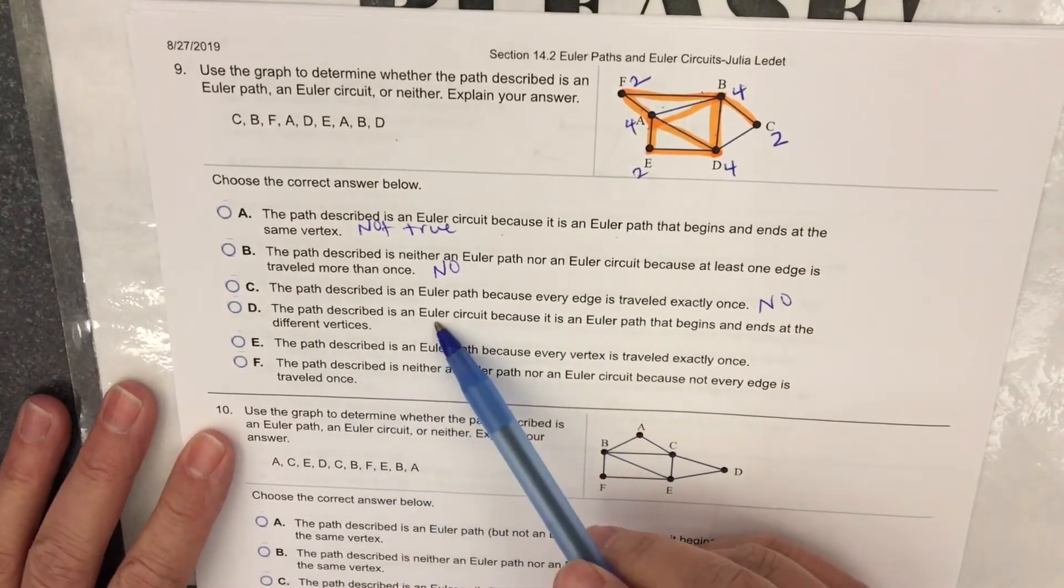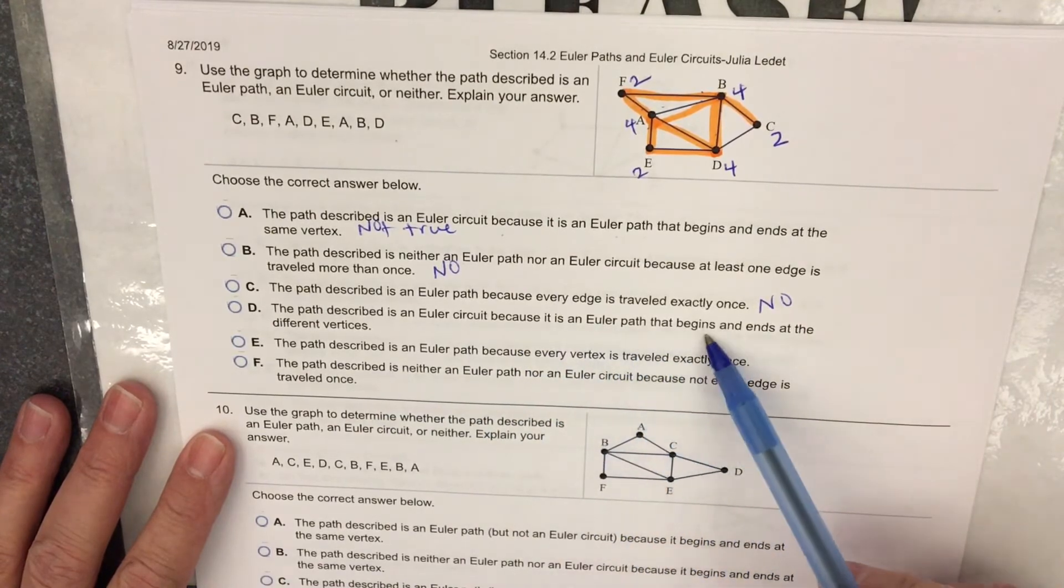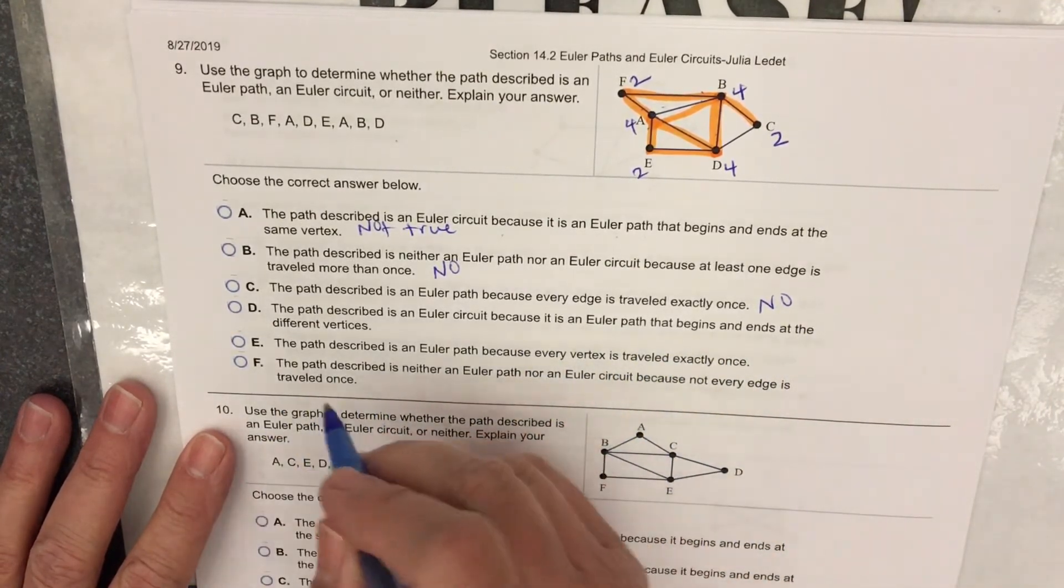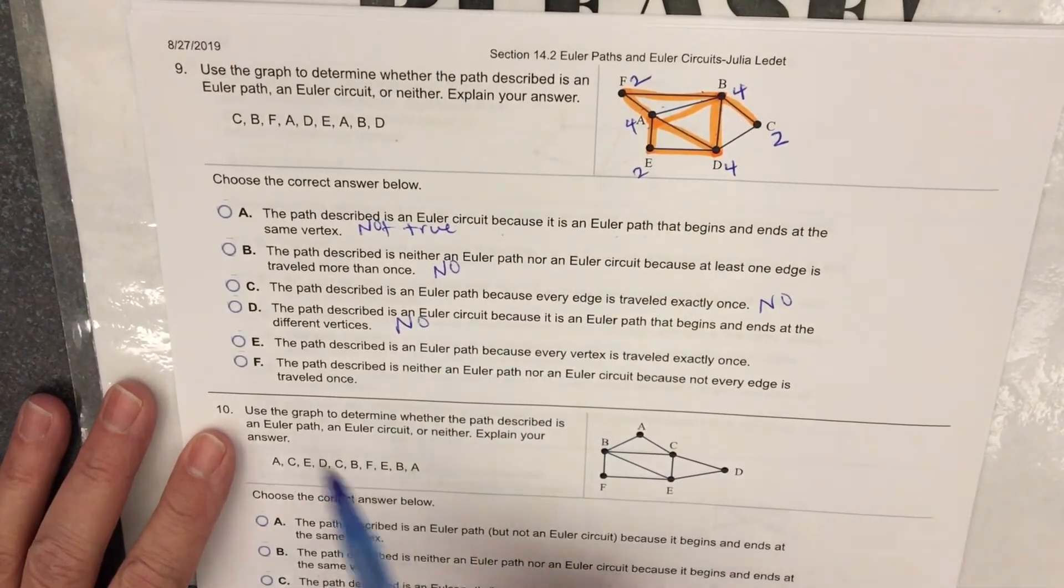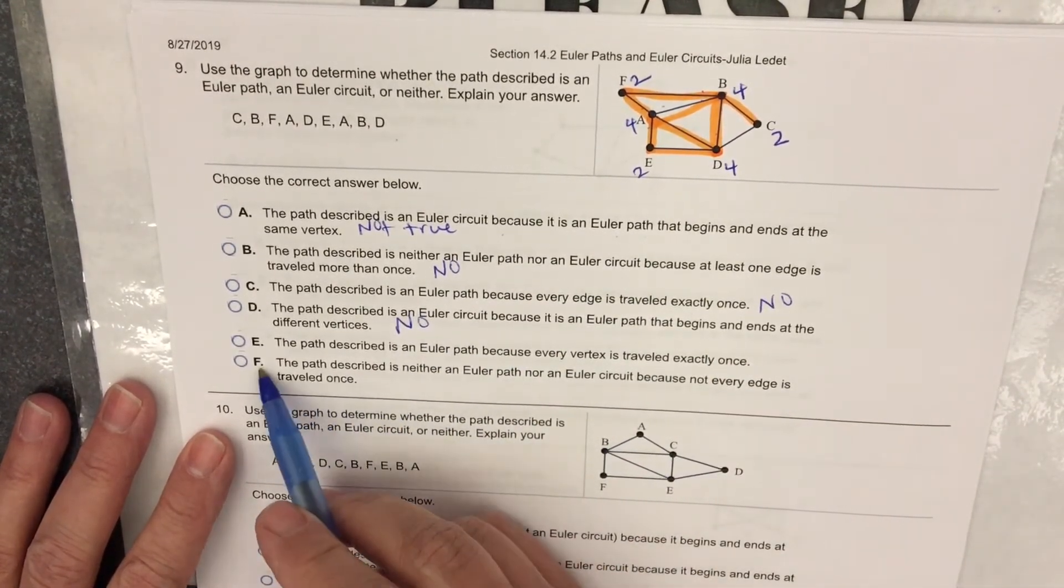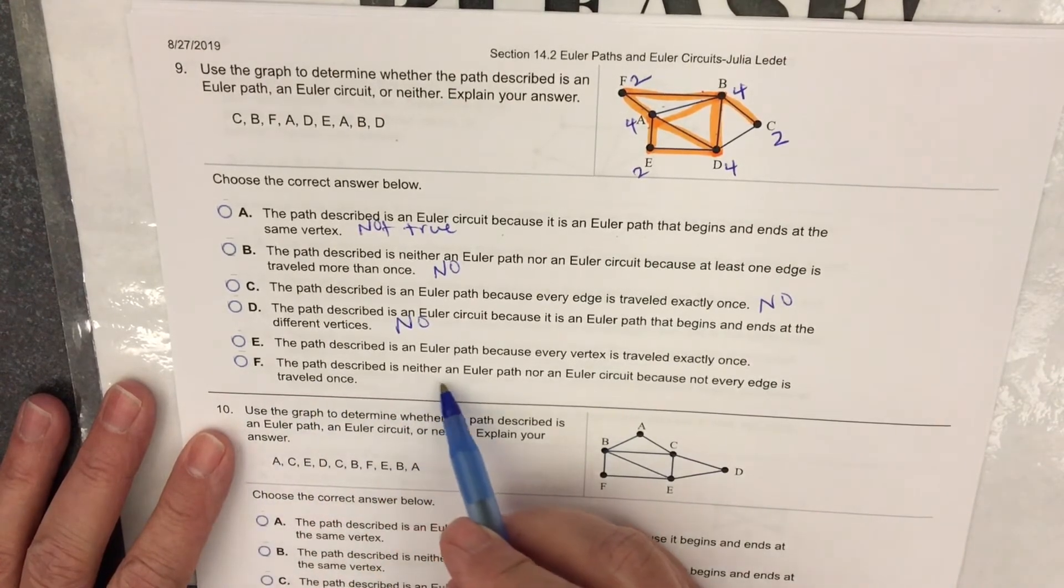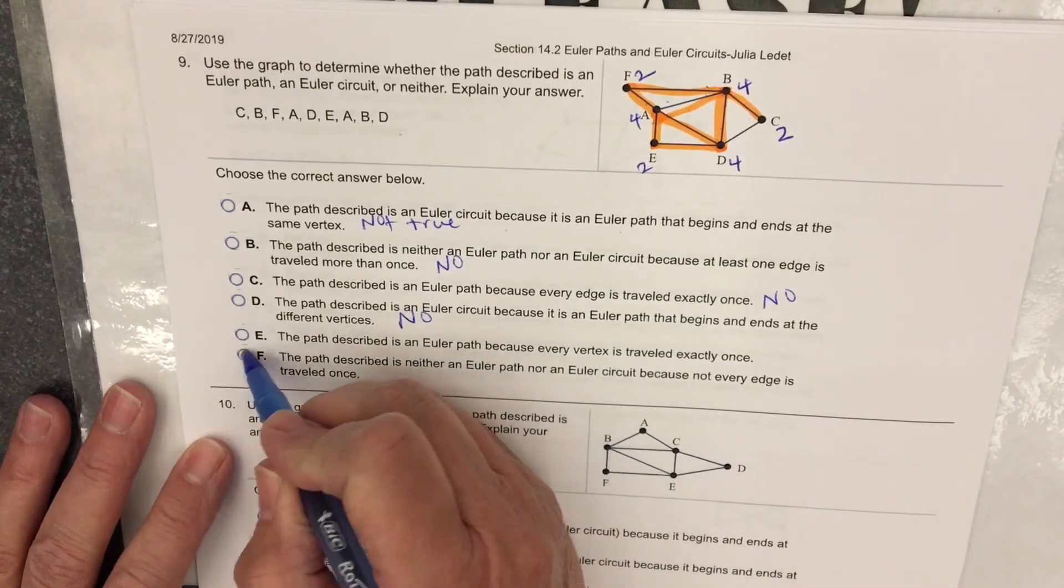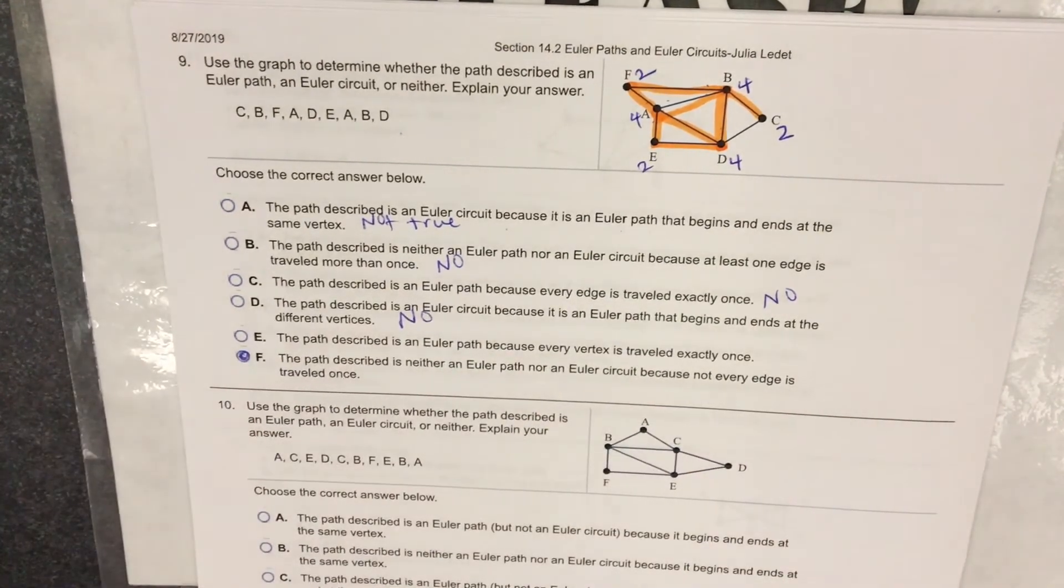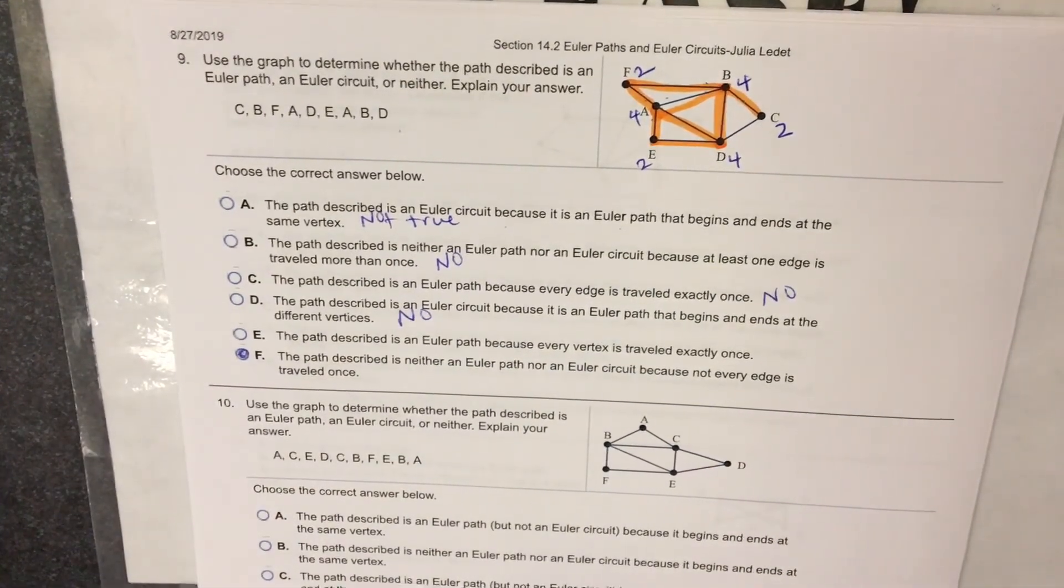The path described is an Euler circuit because it is an Euler path that begins and ends at the different vertices. The path described is neither an Euler path nor an Euler circuit because not every edge is traveled once. There. I'll go with that one.